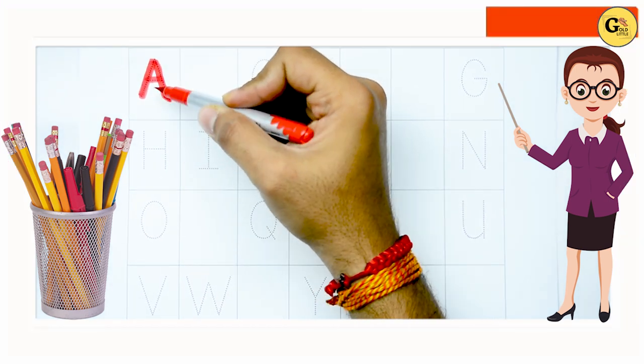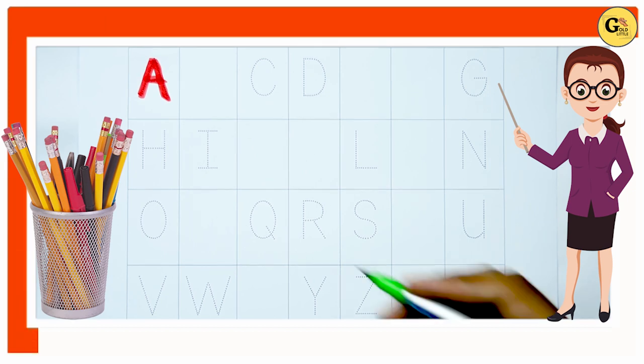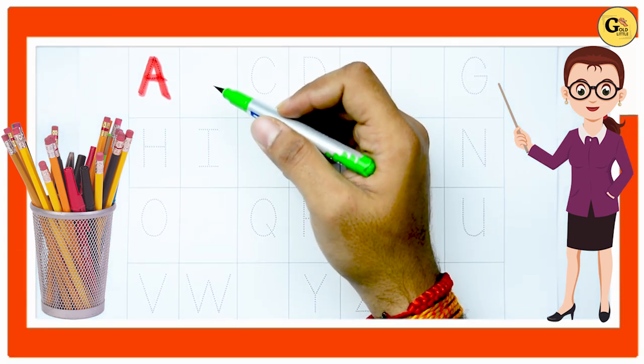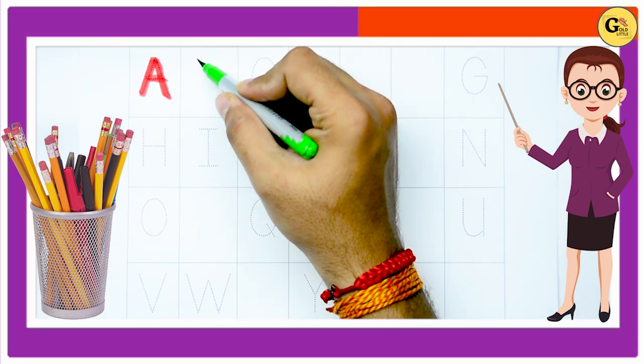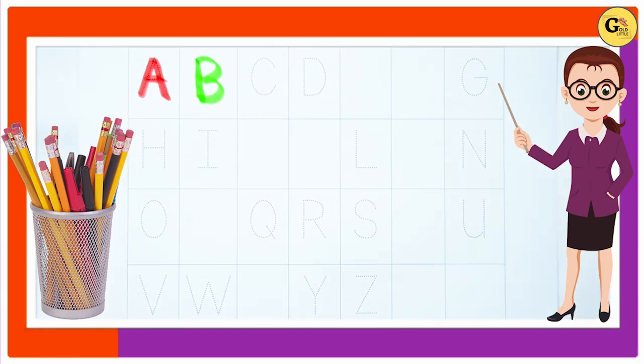Red color capital A. A for apple. Now filling the blanks. After A it's B. Green color B. B for ball.